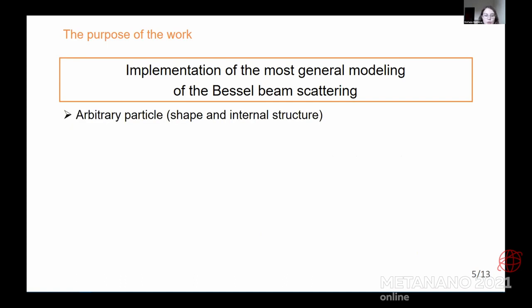That means that we want to consider an arbitrary particle. It's especially important for Bessel beams because all the previous works related to the Bessel beam scattering were mostly considered the particles with simple symmetries such as spheres, cylinders, and other simple shapes. Here we use discrete dipole approximation method that allows us to calculate Bessel beam scattering by the particles of arbitrary shape and internal structure.